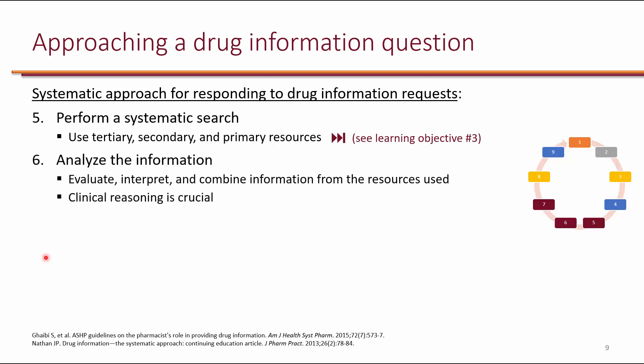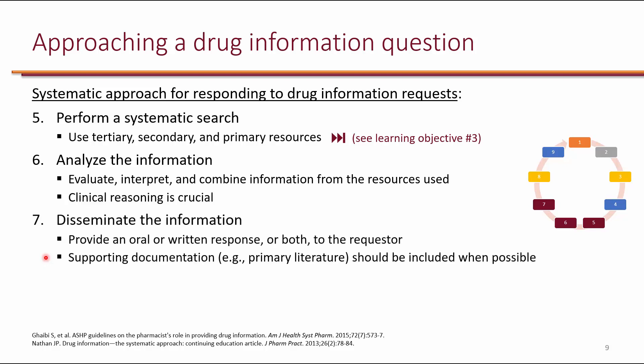The sixth step is to analyze the information. Clinical reasoning is crucial in this step to ensure that the information is interpreted and applied appropriately, and your pharmacotherapy courses will teach you clinical reasoning throughout the curriculum. The seventh step is to disseminate the information. Your response can be in oral or written or both formats depending on the requester. You may also send the requester any supporting documentation such as primary literature.